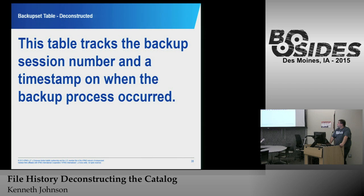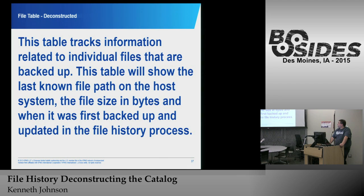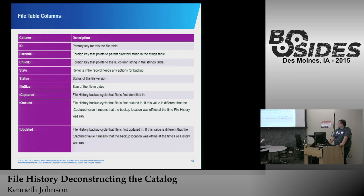The Backup Set table provides a session number and timestamp so you can understand when the backup process happened and compare when files were there versus not. The table columns are ID and timestamp. For the File table, it tracks information related to the files being backed up: the last known file path on the host, file size, when it was backed up. If it's been backed up and is still current there won't be a valid queue entry — it'll be the most recent one. The T-update field is when it was last updated.